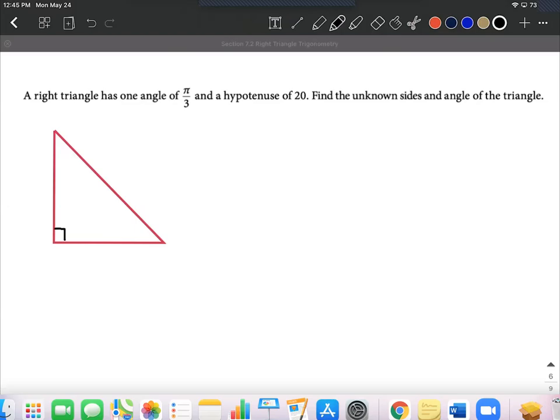On this problem, we want to find a right triangle that has one given angle in radians, pi over three, and then we're also given the hypotenuse for this one. So our goal is to find all those unknown sides and then the remaining angle that we also don't know.